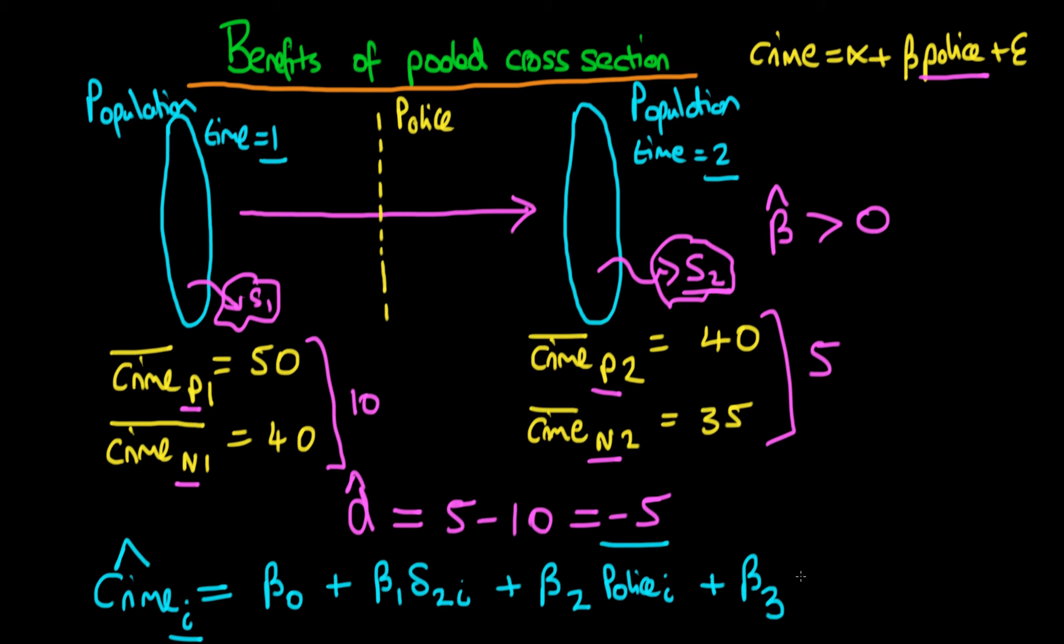And then finally we include a term which is beta 3 times the cross-product of these two terms. So we have our dummy variable delta 2 and we multiply it by our policing variable. And you can actually show that the least squares estimate of beta 3 is actually exactly equivalent to our difference in differences estimator D.